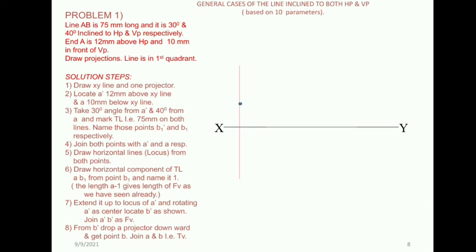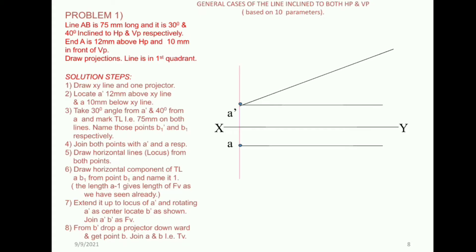The first step is to locate point A: 12mm above HP means A' is 12mm from the XY line, and 10mm in front of VP. We put the true length at 30 degrees on the horizontal axis, giving us B1-dash. The true length is 75mm.